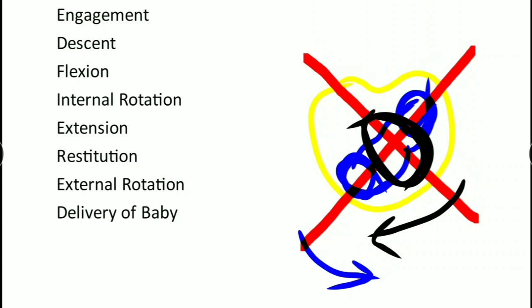In internal rotation, if it is the head then it is twisting at the level of the neck. If it is the shoulders then it is twisting at the level of the trunk. So whenever there is a twist, it has to untwist also.